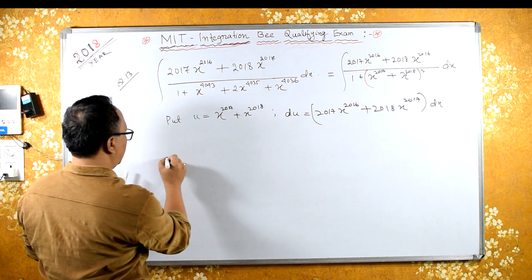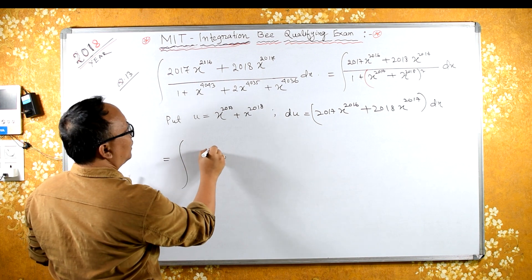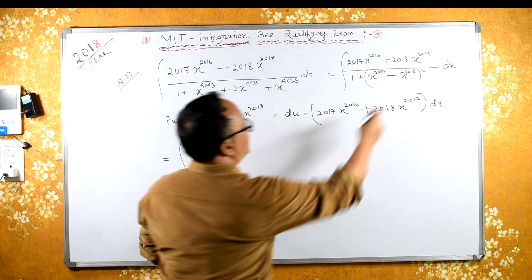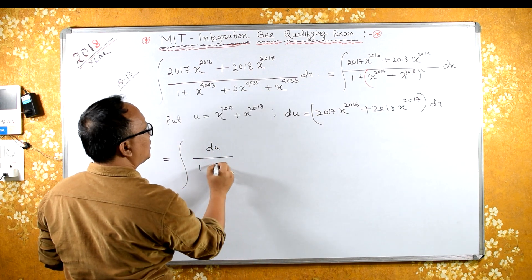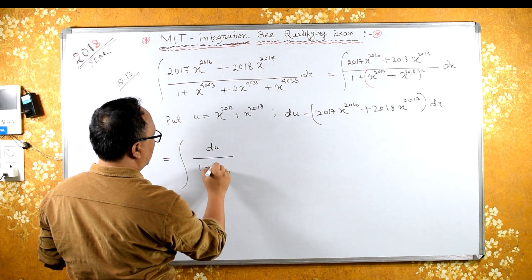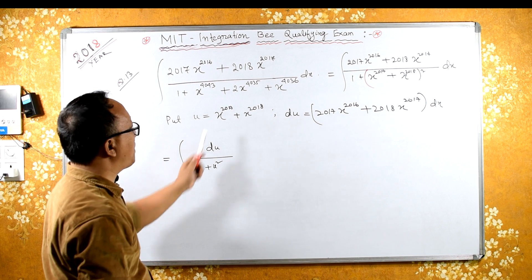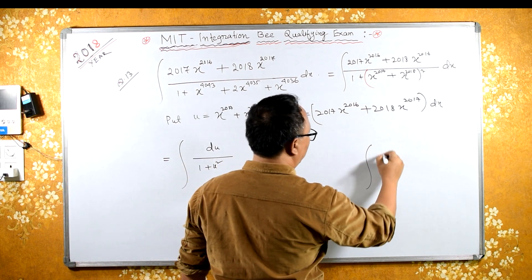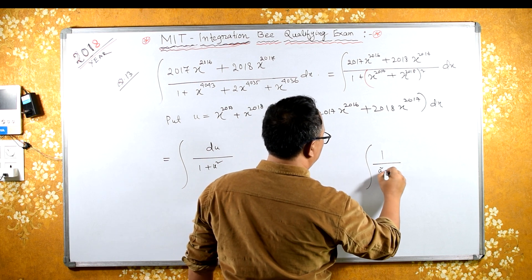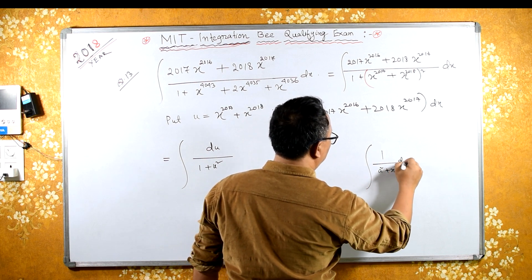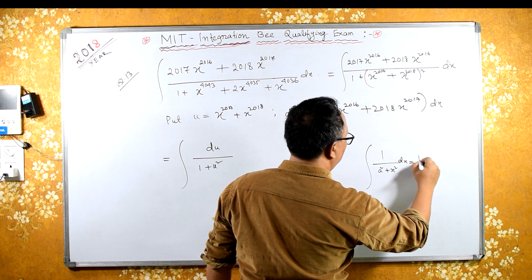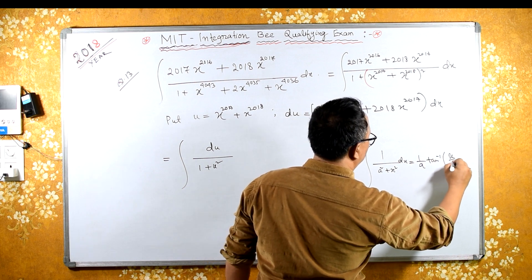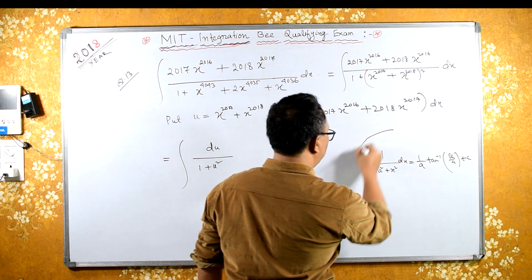So the integral becomes du upon 1 plus u squared. Remember the formula: integral of 1 upon u squared plus a squared dx equals 1 by a times arctan of x by a plus C. Applying this formula with a equals 1, we get 1 by 1 times arctan of u by 1.